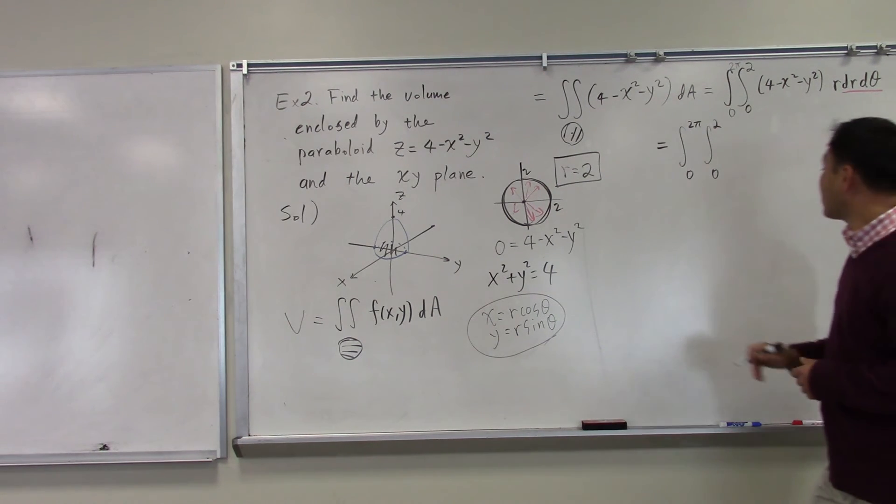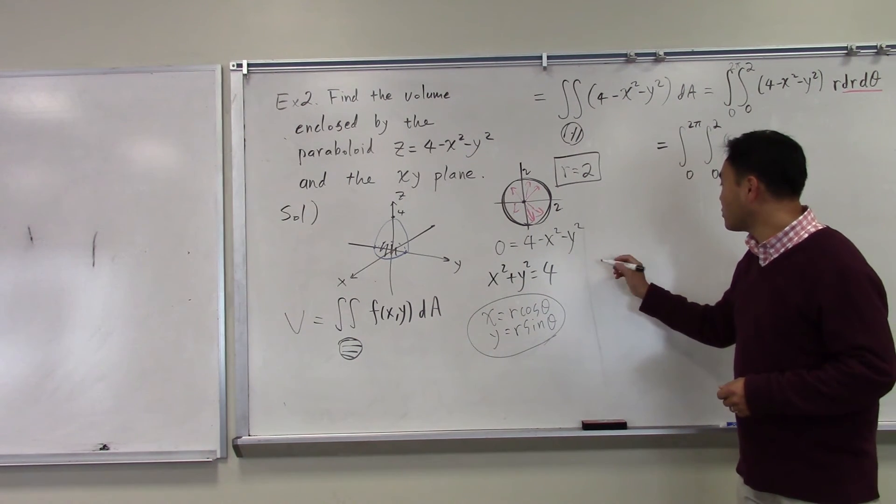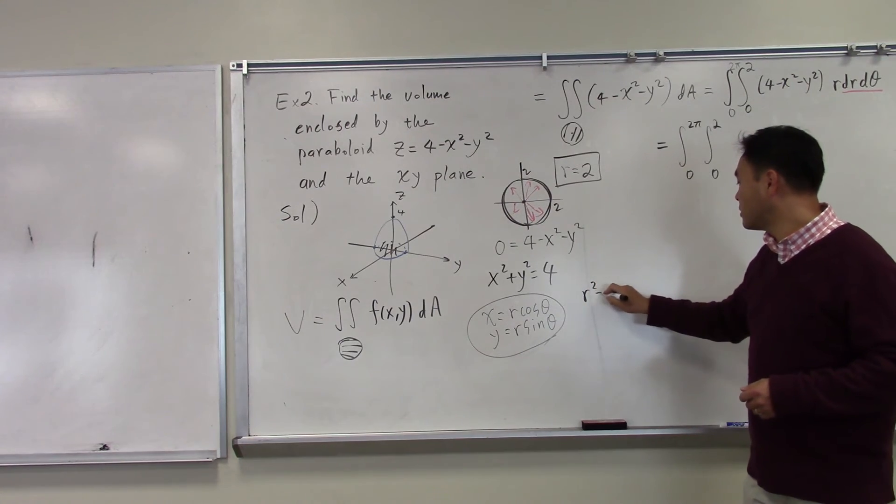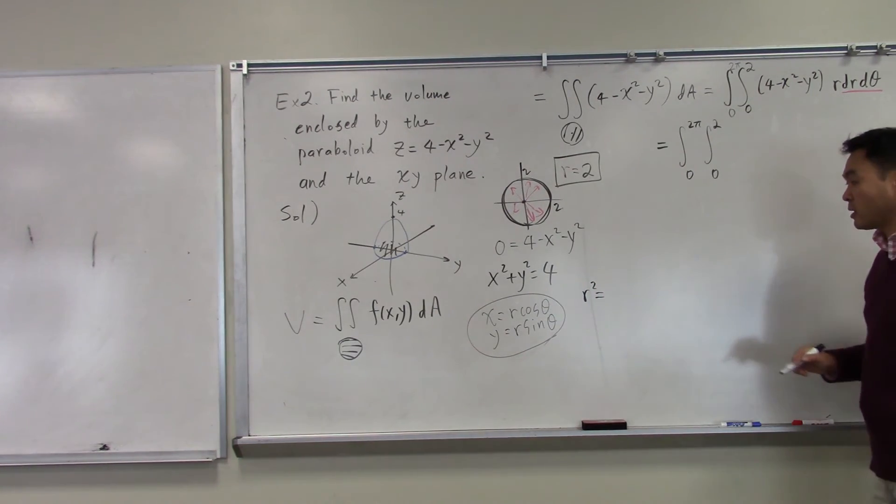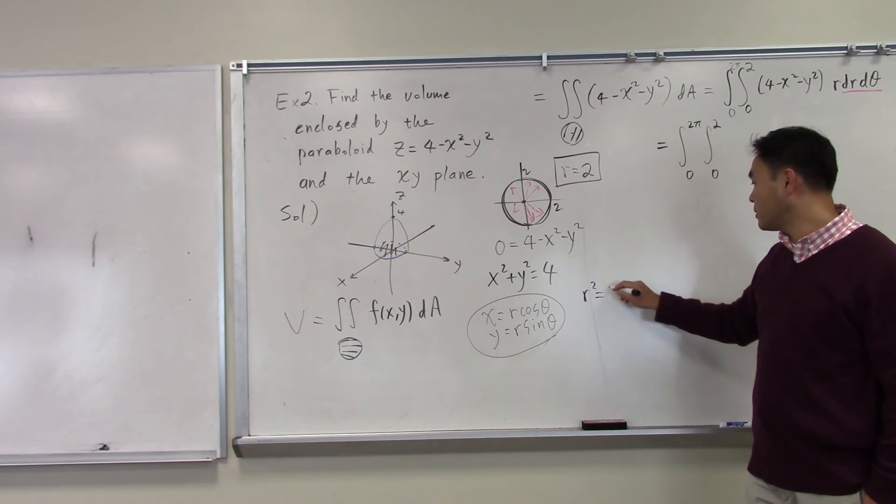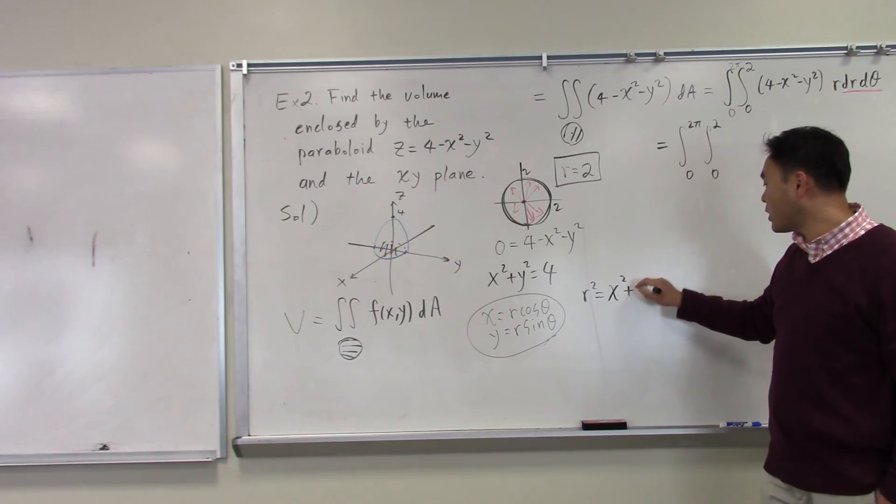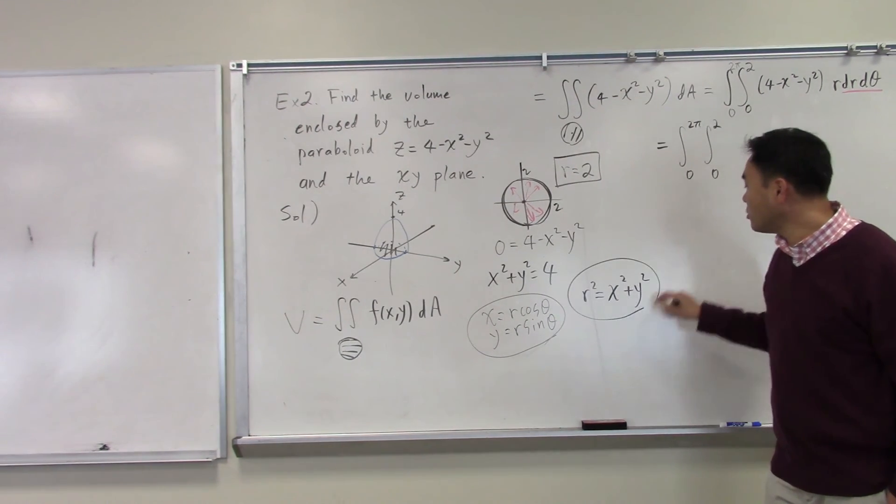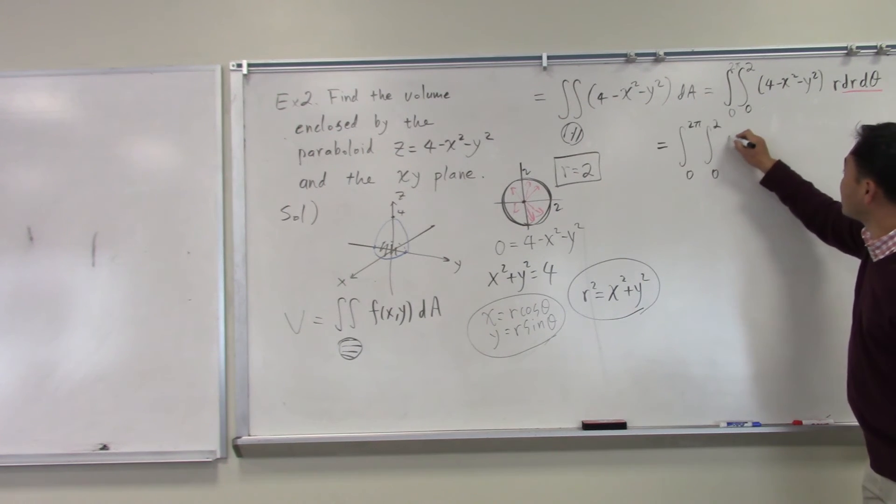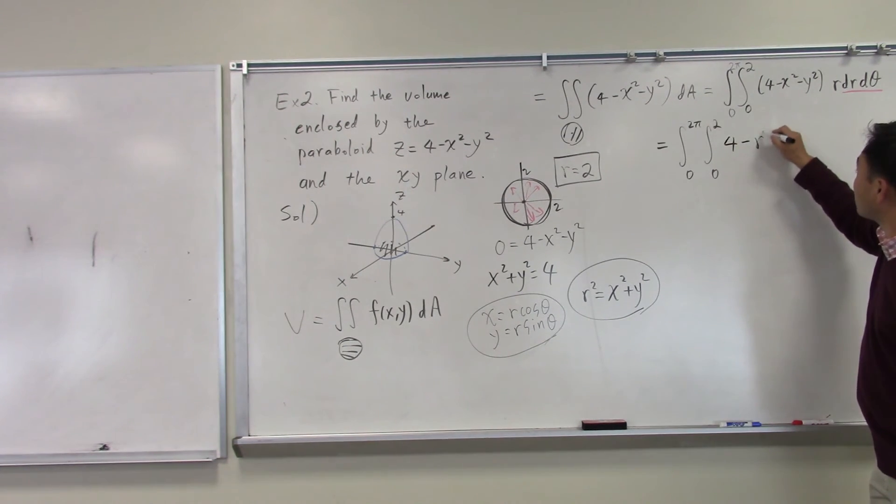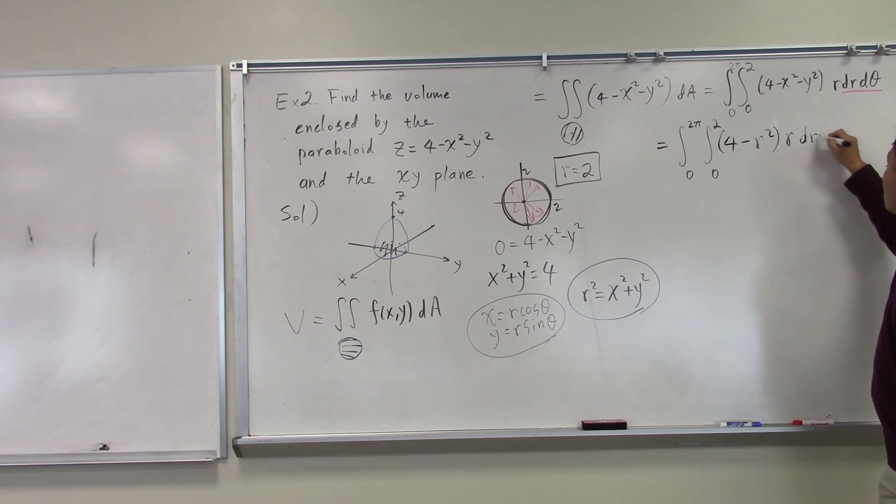So one method will be to plug these in here to represent them as functions of R and theta, but here's an even better way. We know that R squared is what? What's the relationship between R squared and x and y? X squared plus y squared. We can use this and rewrite this inside as 4 minus R squared times R dR dθ.